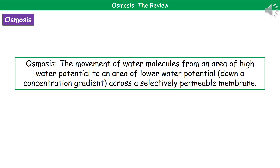Welcome to our review on osmosis. Previously we've already looked at the process of diffusion and now we're coming on to our second process, osmosis. The first thing we need to do is understand what we mean by the word osmosis. Our definition is the movement of water molecules from an area of high water potential to an area of lower water potential, and this happens across a selectively permeable membrane. Just like diffusion, we could describe this as water molecules moving down a concentration gradient. Make sure you've learnt that definition and remember that osmosis is only the movement of water.